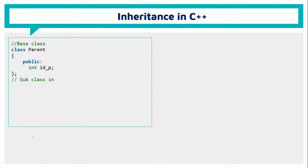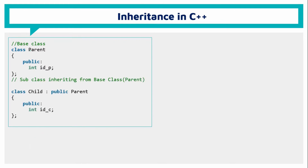Let's look at an inheritance program. First, we have a class that is not inheriting — this is called the parent class. It has an integer type variable called ID. Now we create a second class derived from the previous class, inheriting the character of the parent class.